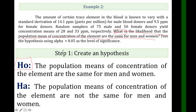Because the statement is positive, it says equal or are the same. For the HA, the population means of concentration of the elements are not the same for men and women. That's how we always do HO and HA - always equal and not equal.